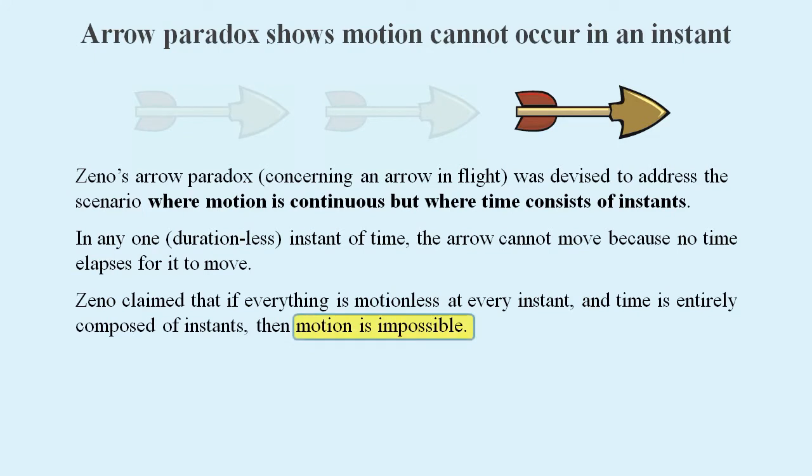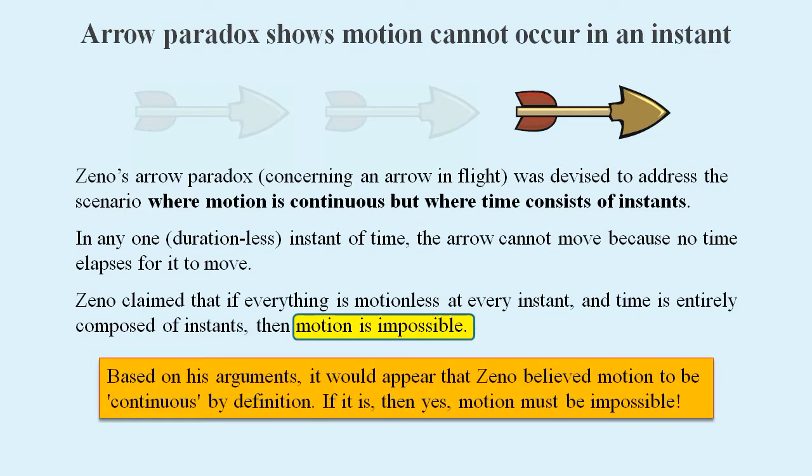So this claim that motion is impossible is based on the idea that motion is continuous by definition. What Zeno was really doing was showing that continuous motion was impossible, where a strong emphasis should be placed on the word continuous.